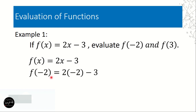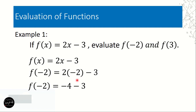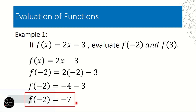Replace x and substitute -2. So f(-2) = 2 times -2 minus 3. Applying PEMDAS, we do multiplication first: 2 times -2 is -4, then copy minus 3. Negative 4 minus 3 is -7. So if the value of x is -2, the value of y is -7.